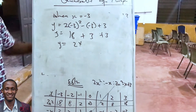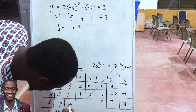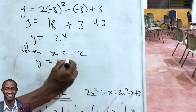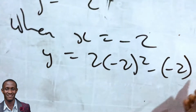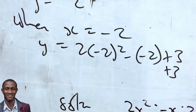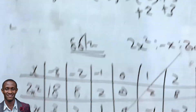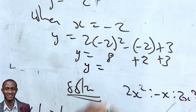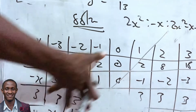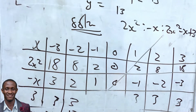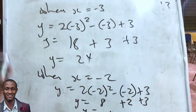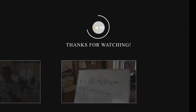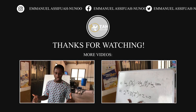For x = -2: y = 2(-2)² - (-2) + 3 = 8 + 2 + 3 = 13. You just write it out using the values already found. When you use the calculator with this table approach, showing your working becomes very easy and you can fill the table, sketch the graph, and get full marks quickly. Watch out for the next video and don't forget to share.